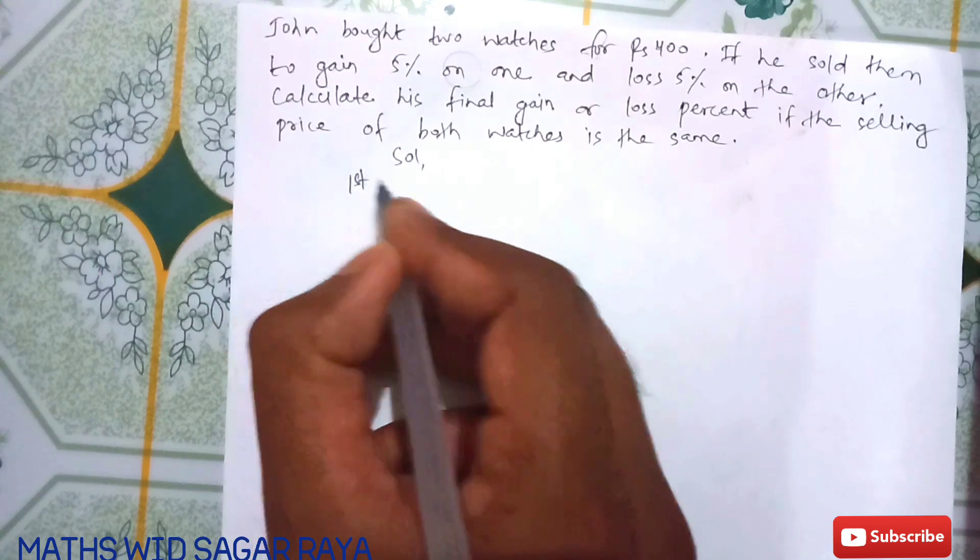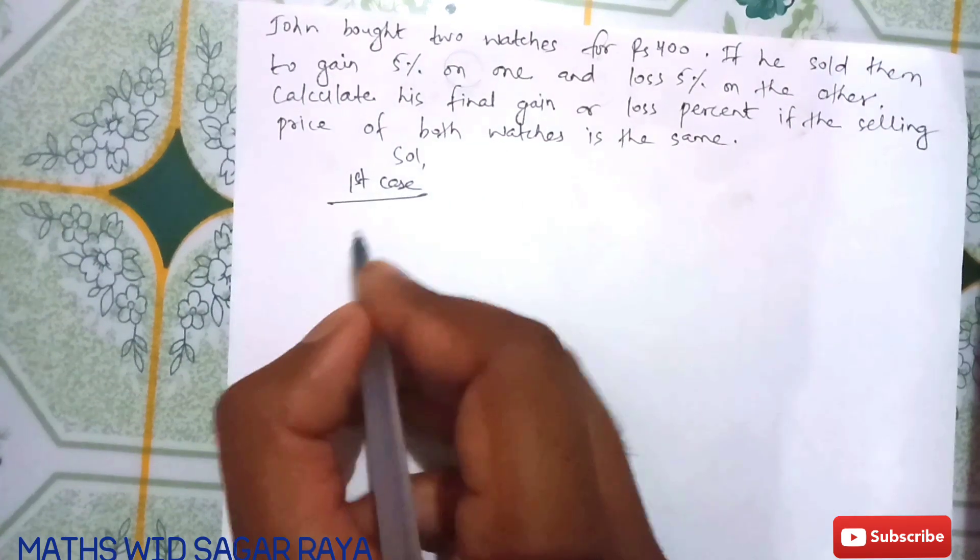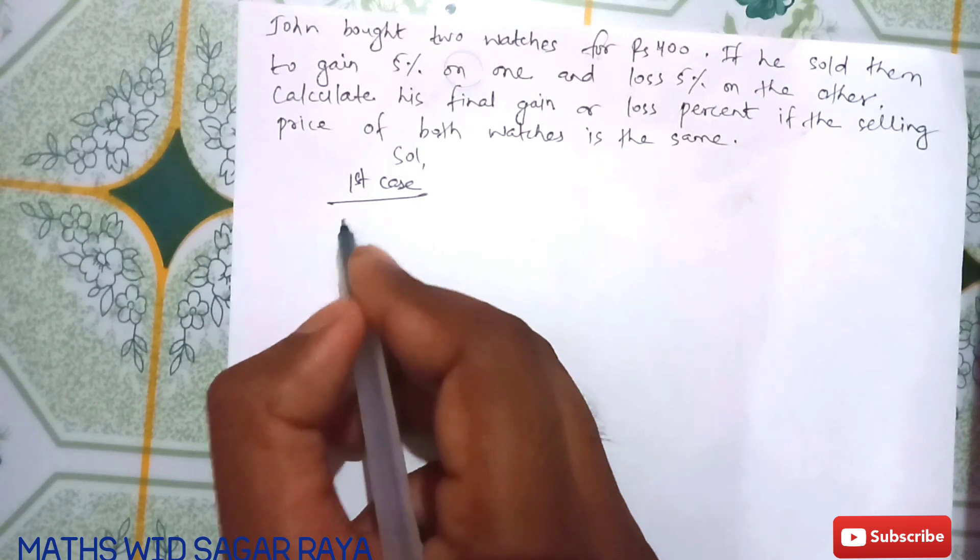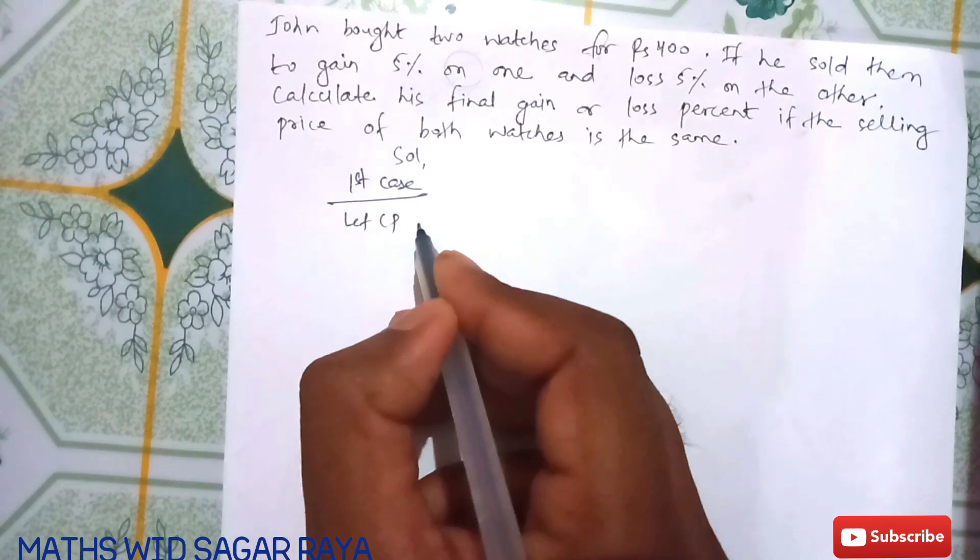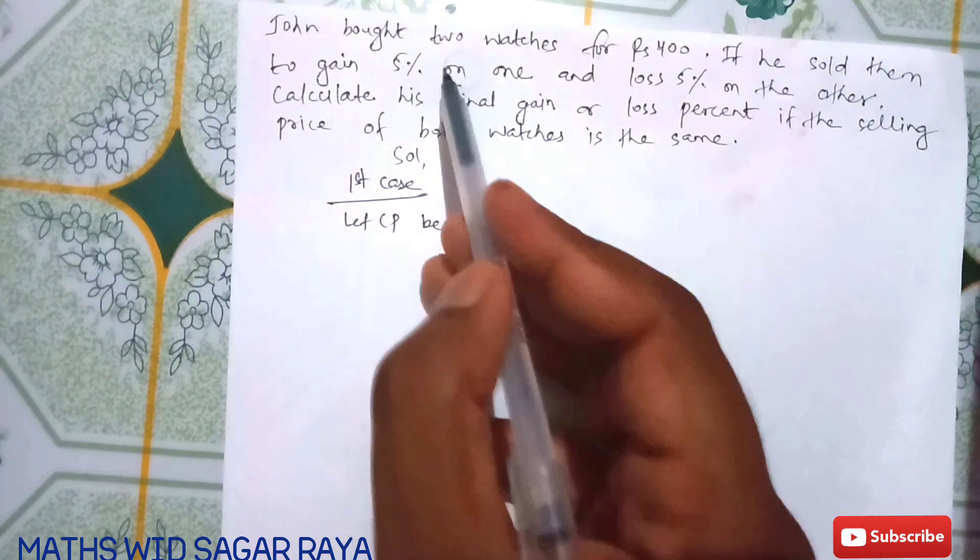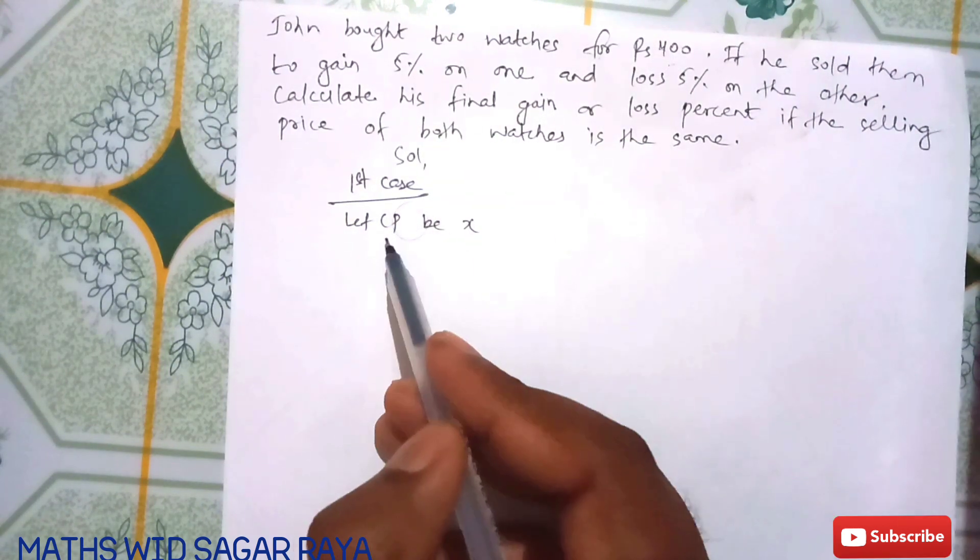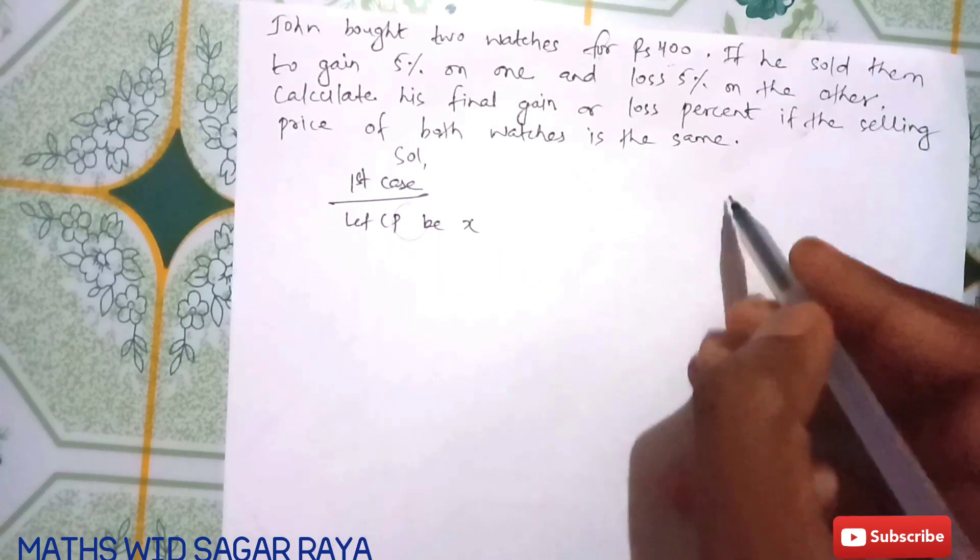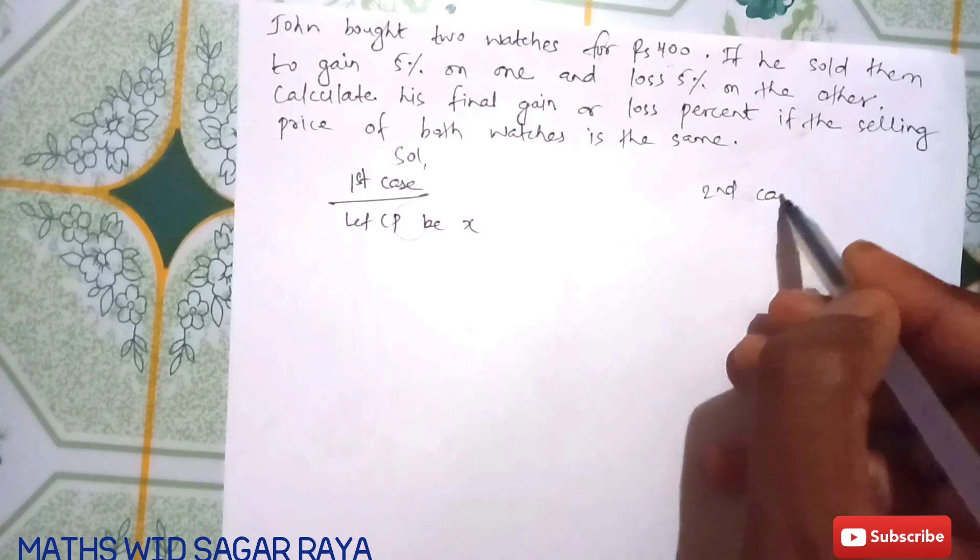First case: let CP of one watch be X. Since the combined price is given as 400, if we suppose one watch is X, then in the second case we can let CP be 400 minus X.